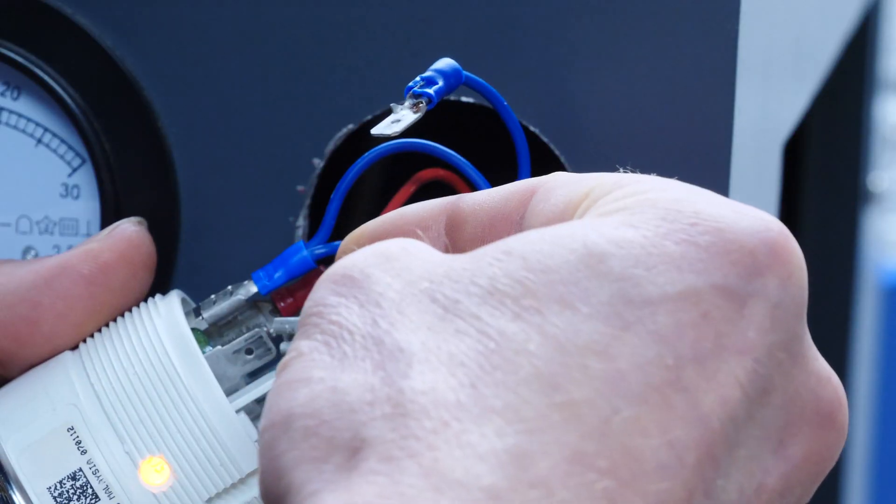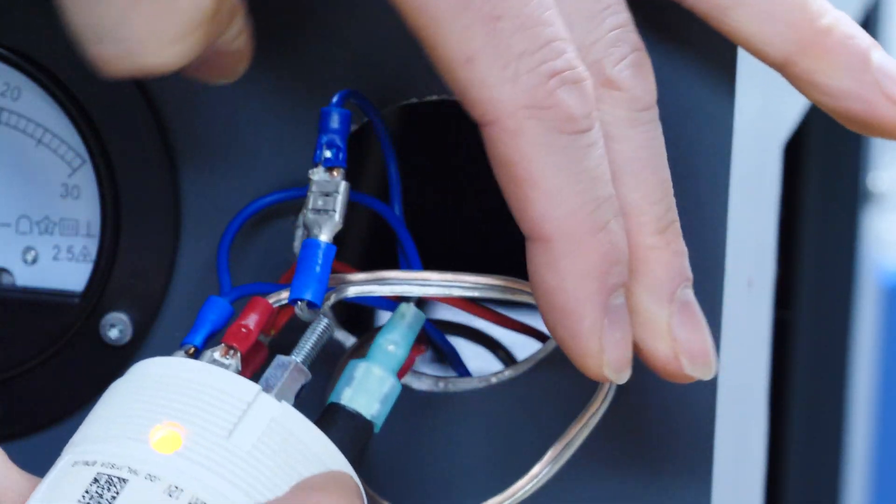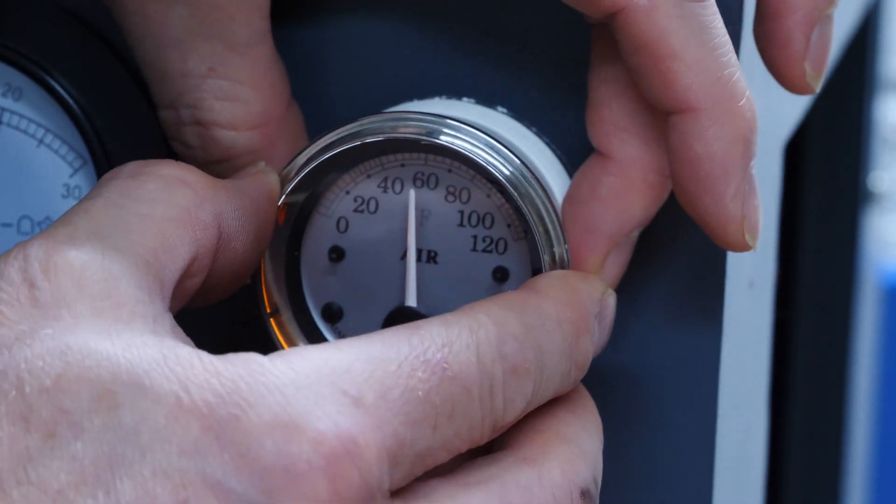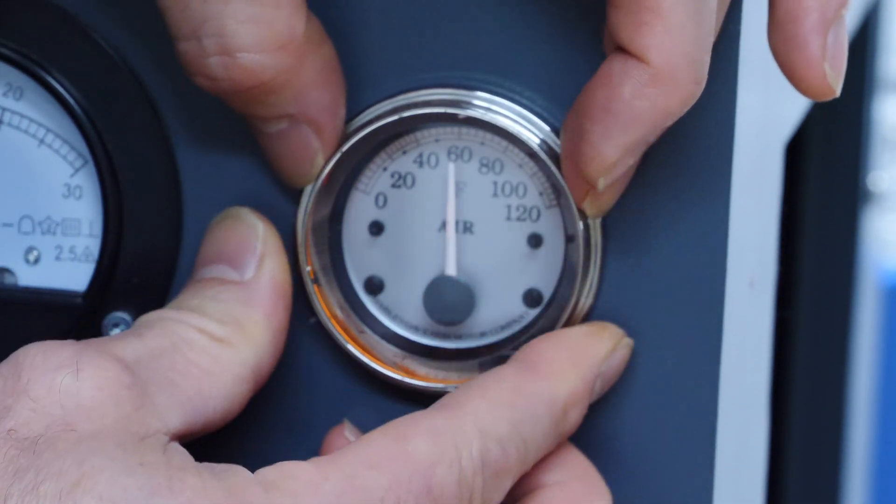And then this is the sensing wire right here. So here we'll hook up, and it doesn't matter, this way, this way. And so now we have the sensor installed and we just have to mount the gauge and the job is done.